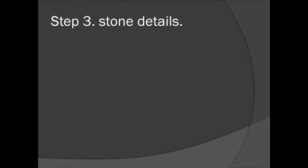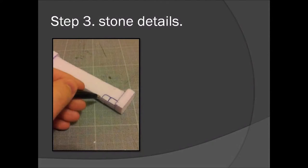Step three: stone details. First use the mechanical pen to draw stone details to the wall. Don't be afraid to push it hard into the polystyrene because you want the texture.